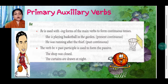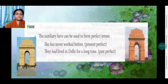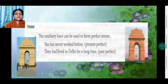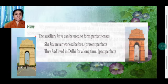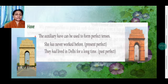The verb 'be' plus past participle is used to form the passive. For example: 'The shop was closed.' 'The curtains are drawn at night.' The auxiliary verb 'have' can be used to form the perfect tense. 'She has never worked before' — present perfect. 'They had lived in Delhi for a long time' — past perfect.